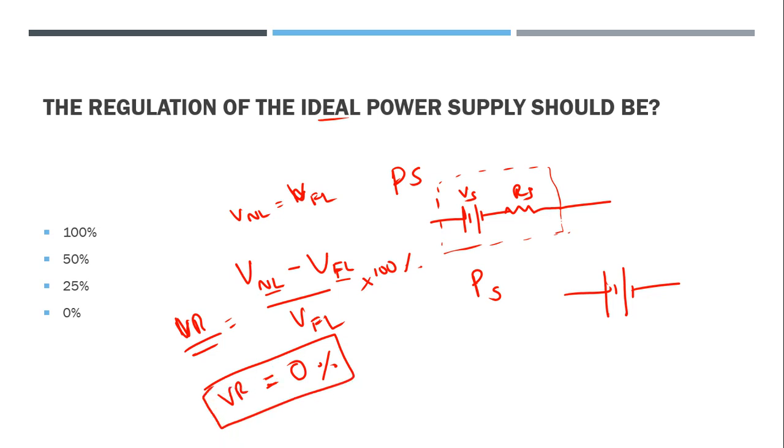Next question: The regulation of the ideal power supply should be - the power source has source resistance and source voltage. The ideal power source has zero resistance, so no voltage drop.